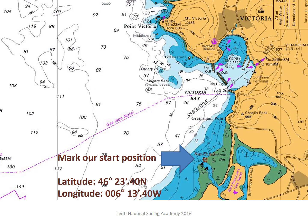The first thing we need to do is to mark our start position. In this example we're just at the entrance of Bram Hope Bay, in position 46 degrees 23 minutes decimal 40 north and 6 degrees 13 minutes decimal 40 west. We mark this with our symbol for a fix: a dot and a circle.